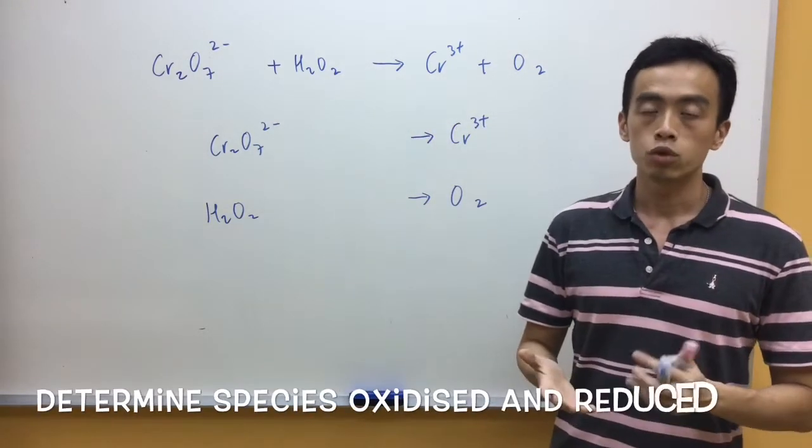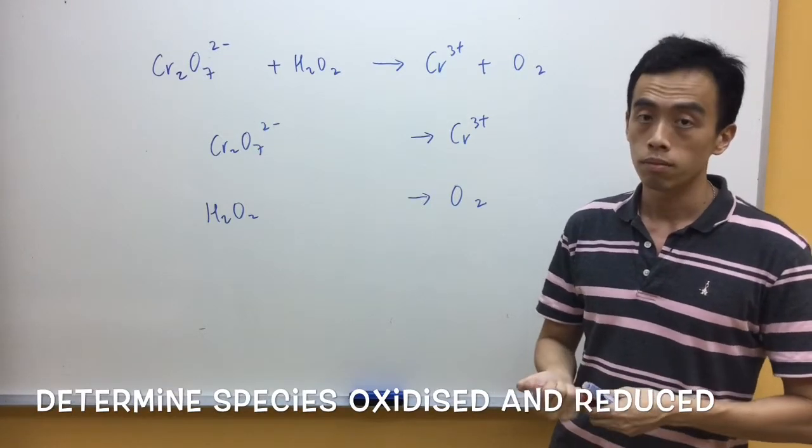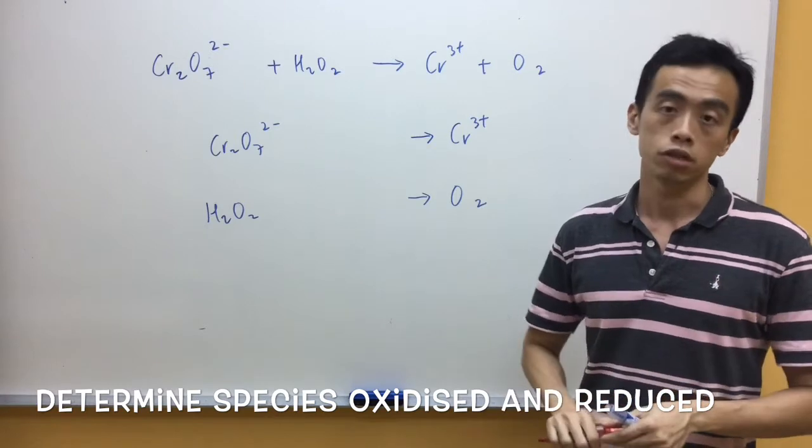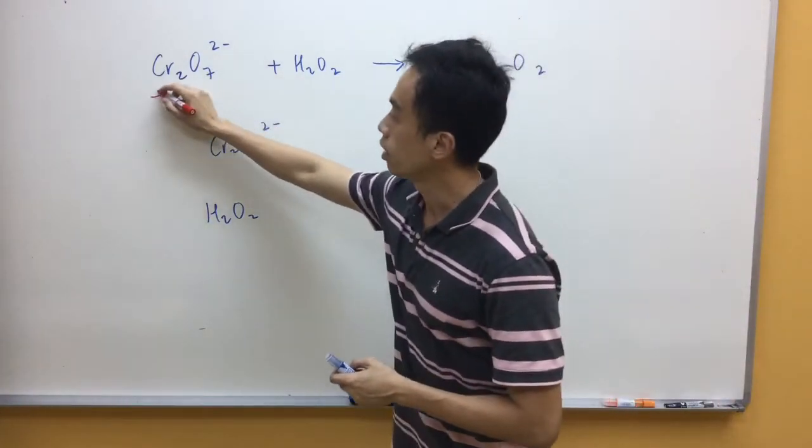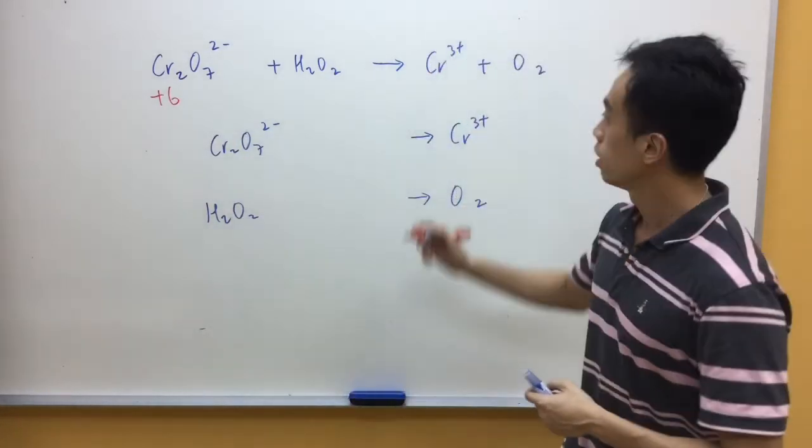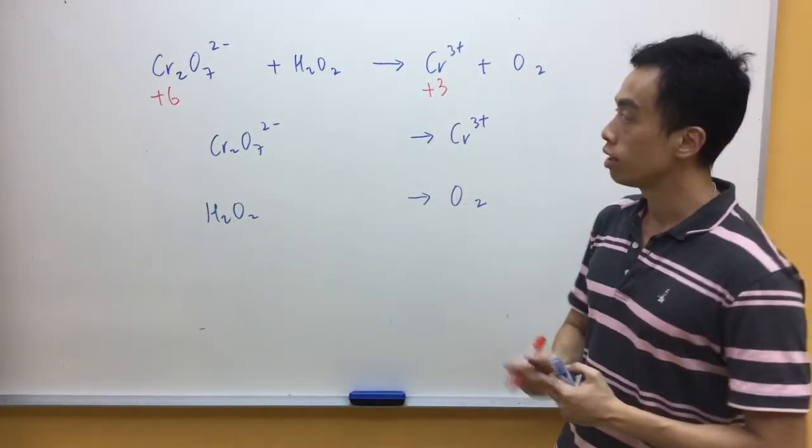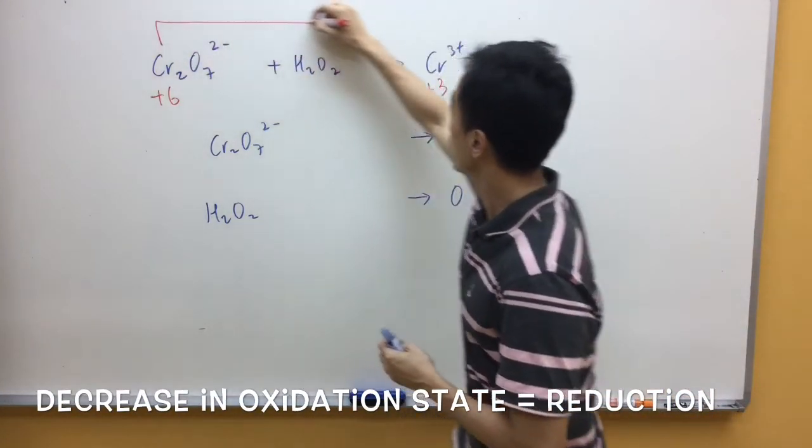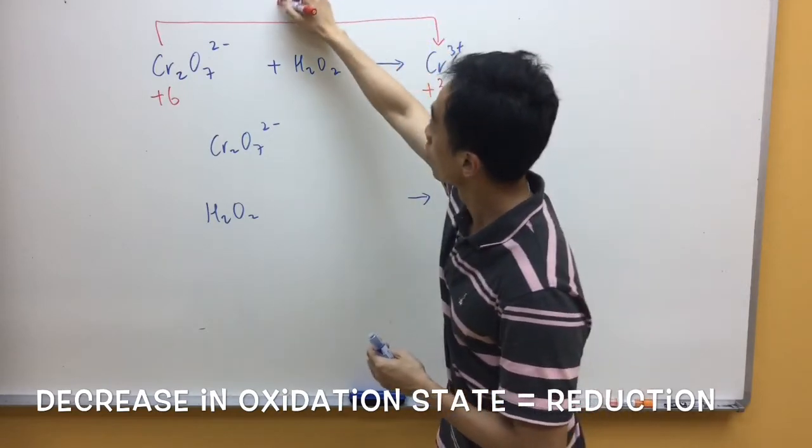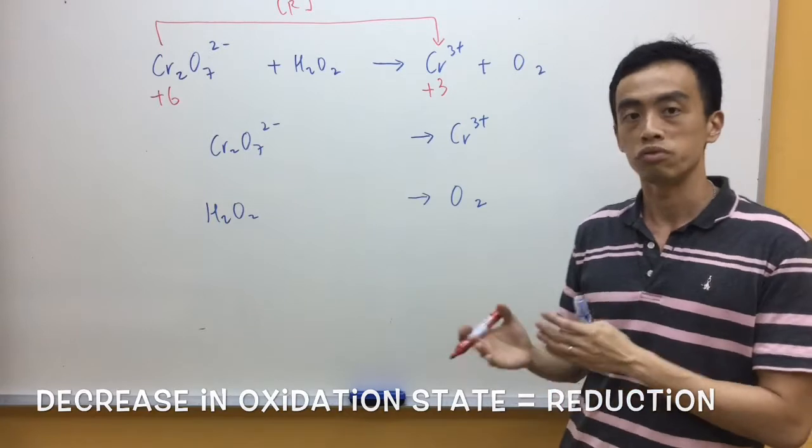What we have to decide first is which species gets oxidized and reduced, which can be easily determined by the changing oxidation state of the species. Now the oxidation state for Chromium in Dichromate is +6, Chromium 3+ is +3, so I know that there's a decrease in the oxidation state from +6 to +3. So therefore I know that my Dichromate undergoes reduction.